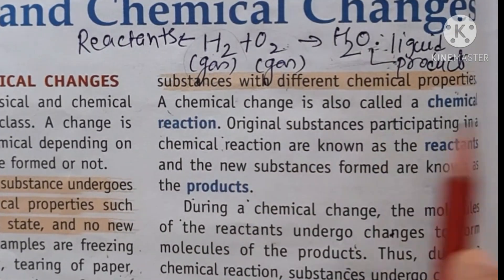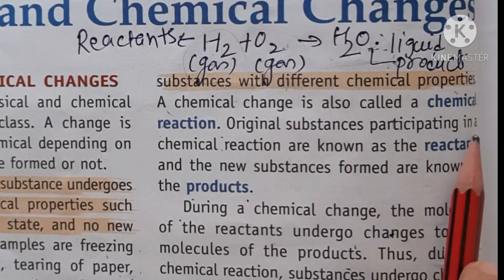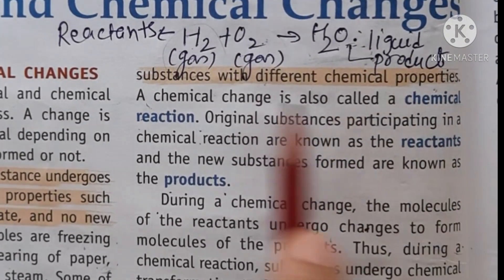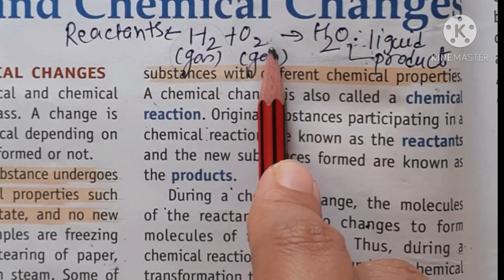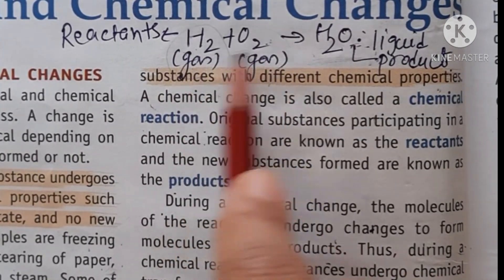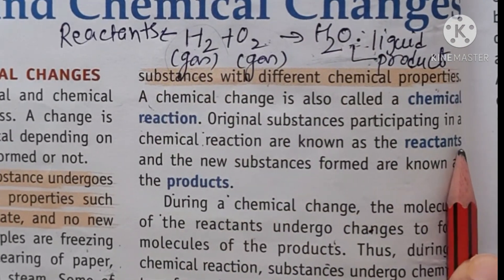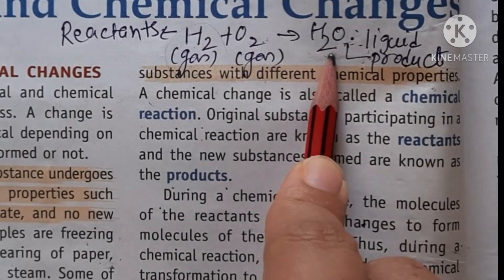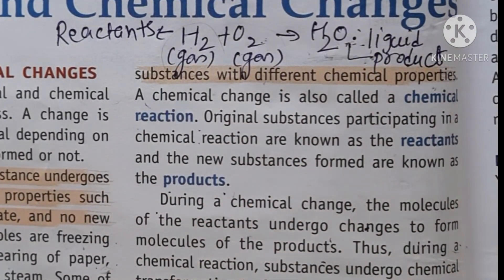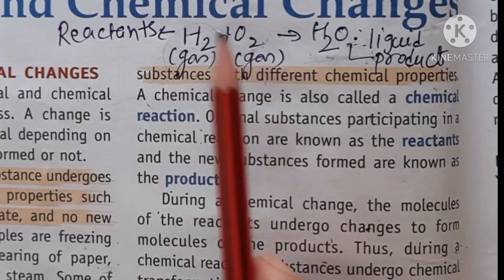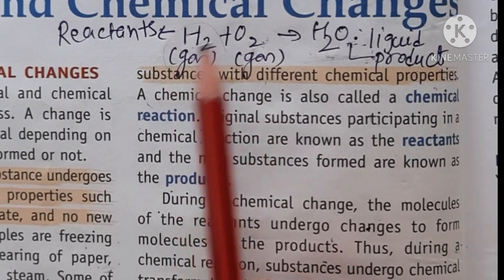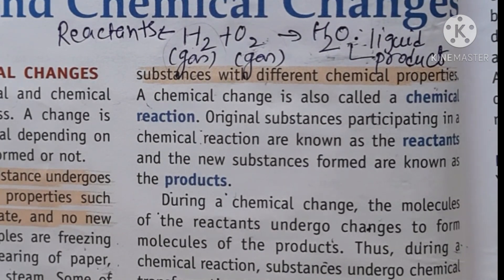The original substances which participate in the chemical reaction are known as the reactants, and the new substance formed after the reaction is known as the product. During a chemical change, the molecules of the reactants undergo change to form the molecules of the product. When hydrogen and oxygen combine, they first break down into atoms and then those atoms combine to form a new molecule, and there is a formation of a new substance.